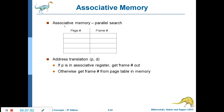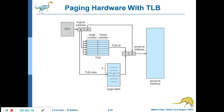In associative memory, you have a page number and its associated frame number. The CPU generates a logical address with a page number. Rather than going directly to the page table — which requires finding where the page table is located in main memory and spending one memory access time — you instead go to the TLB first, which is a hardware memory similar to cache.